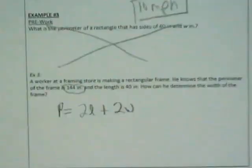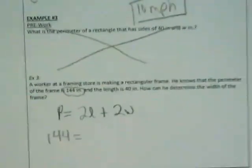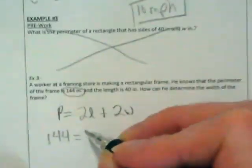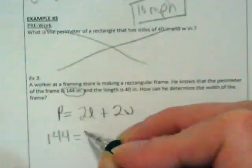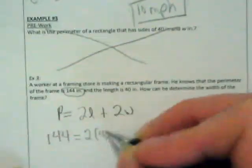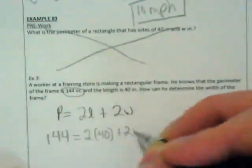What numbers do we have? What's this 144? 144. What other number do we have? And what does that stand for, the L or the W? So two times 40 plus two times W.